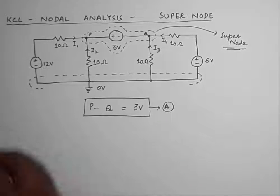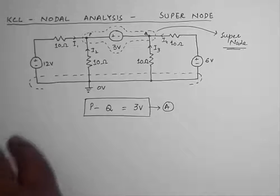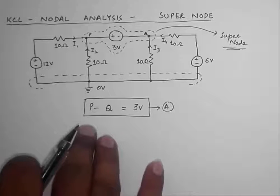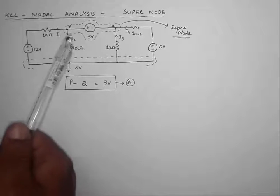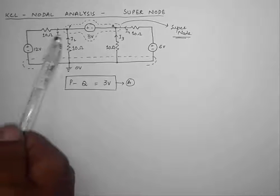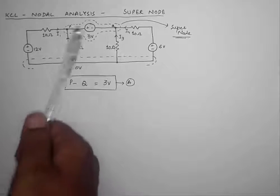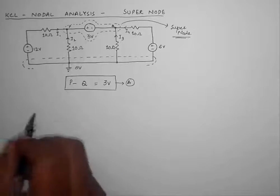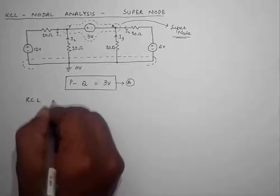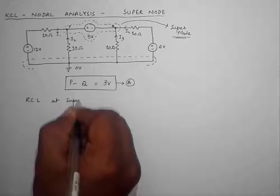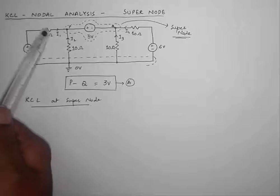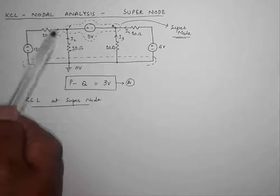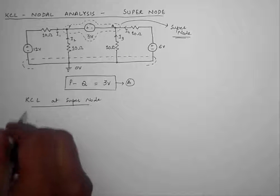It is a little bit simpler than what we were doing in KCL earlier, and you can see that we have already reached our first equation without needing to apply KCL on each node. Now I am going to apply KCL — instead of applying it on each of the nodes P and Q, I am going to apply KCL on this whole supernode, treating it as a single node. The sum of all the currents — I1 plus I2 plus I3 plus I4 — entering into the supernode is equal to 0.